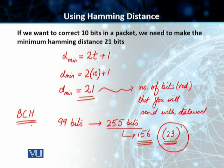This is the case of a famous BCH code. This actually makes hamming distance slightly inefficient as compared to the other forward error correction techniques that we will be talking about.